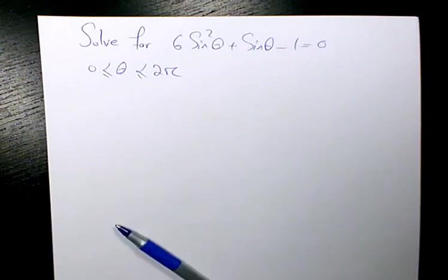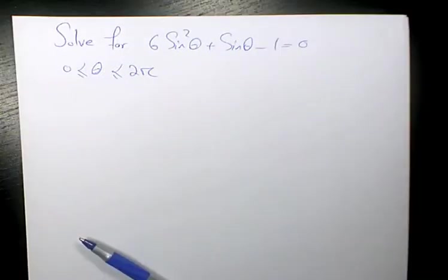What's up guys, this is Massey, welcome to my channel. In this video you will learn how to solve this trigonometric equation. The equation is saying solve 6 sine squared theta plus sine theta minus 1 equals 0, when theta is between 0 and 2 pi. The first thing I need to do for solving trig equations like that is to factor this quadratic equation.